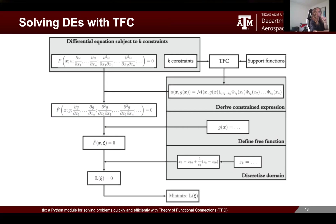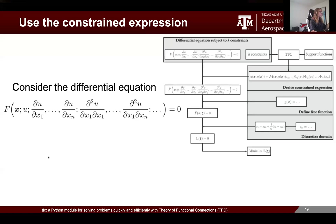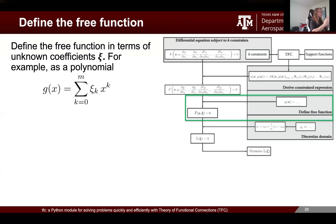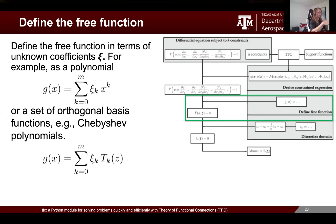You take your PDE plus your constraints and create your constrained expression from that. When you create your constrained expression, you eliminate the dependent variable U — the dependency is now on the free function G. The next step is to pick a form for G that you can solve with a finite set of parameters — something like Chebyshev polynomials, or something more exotic like support vector machines, neural networks, or extreme learning machines. The idea is you choose a form for G with a finite set of parameters you can vary to optimize, such as the residual for a differential equation.